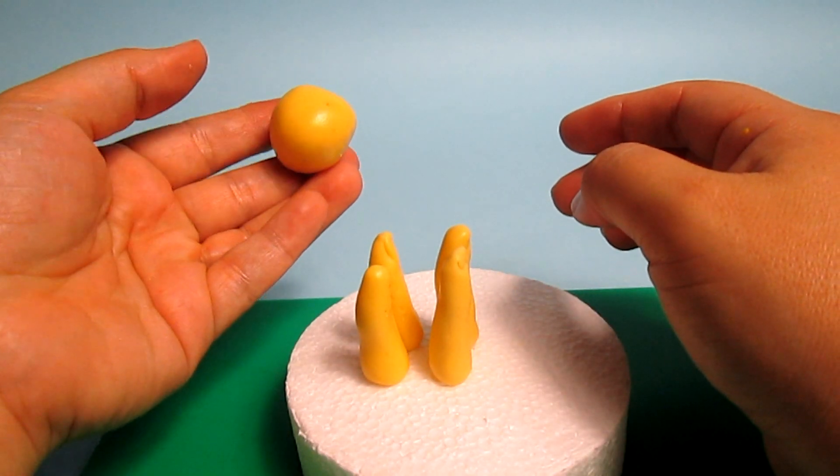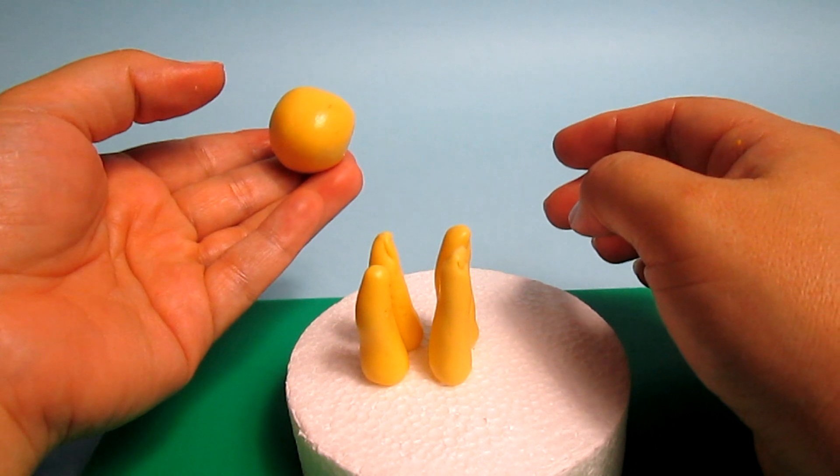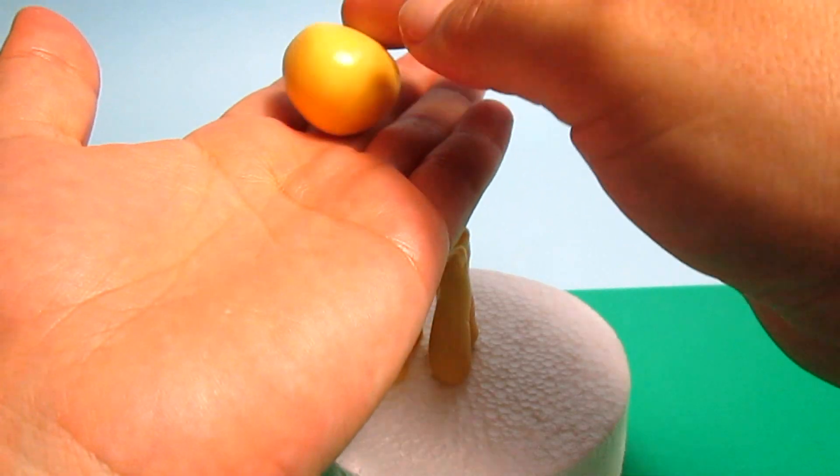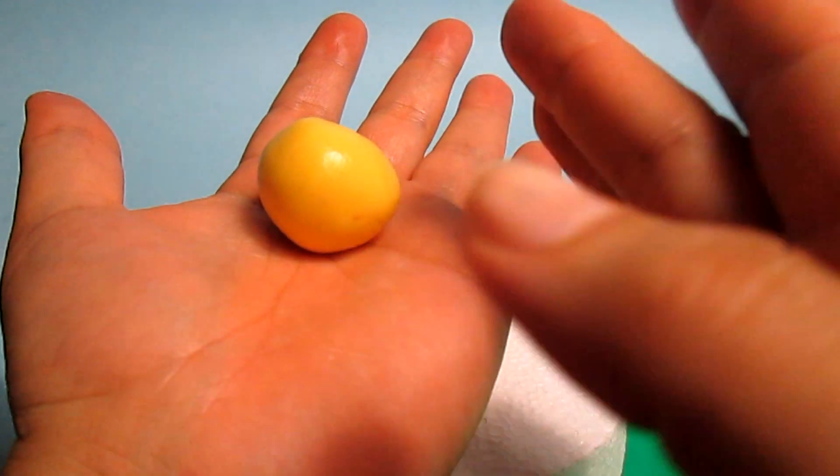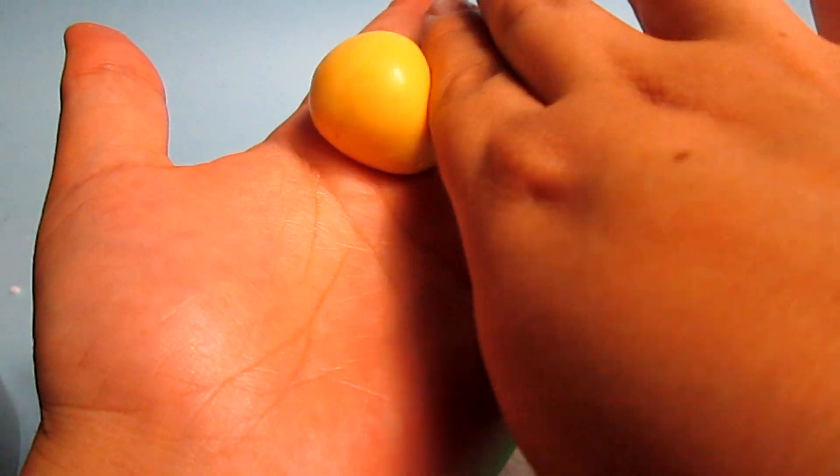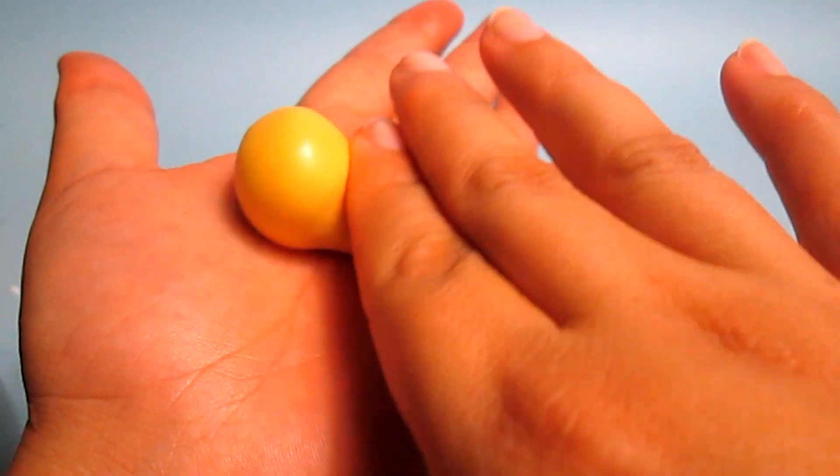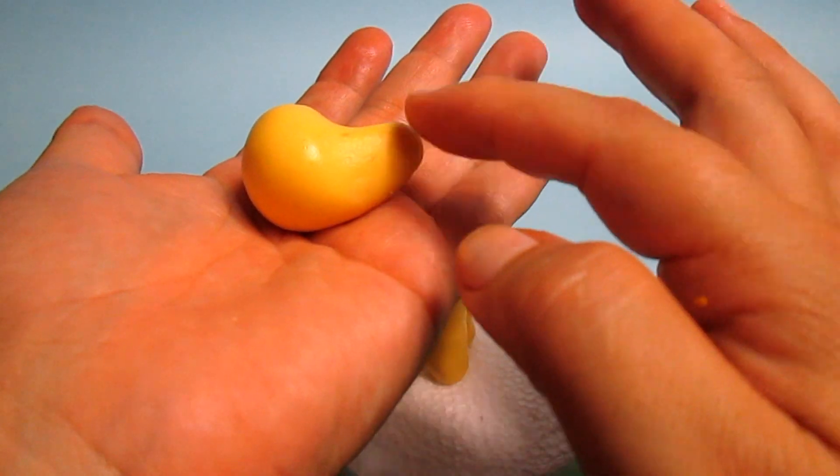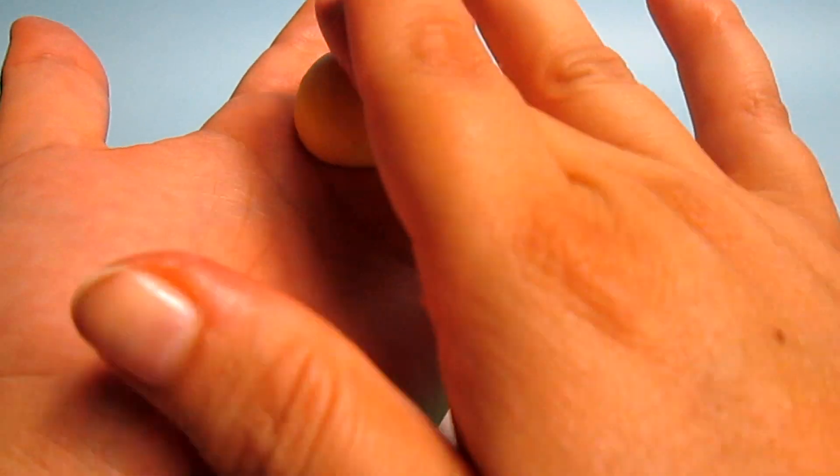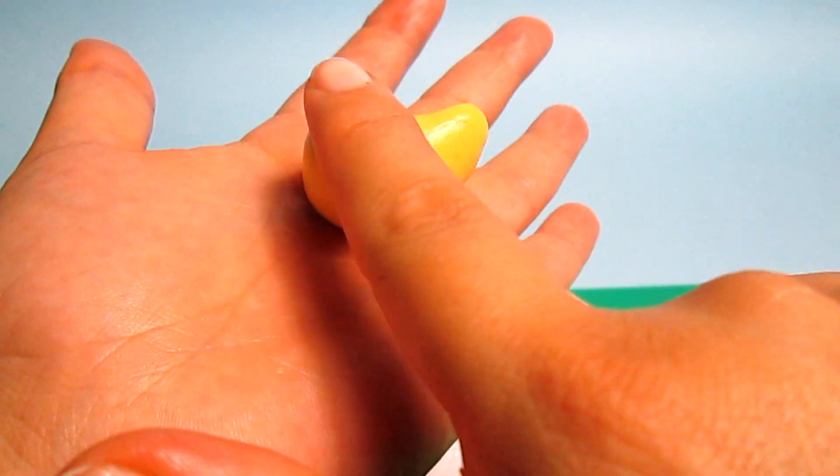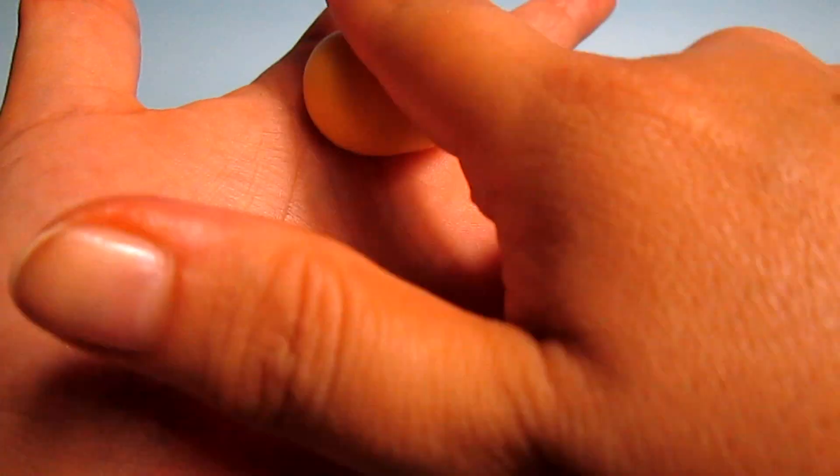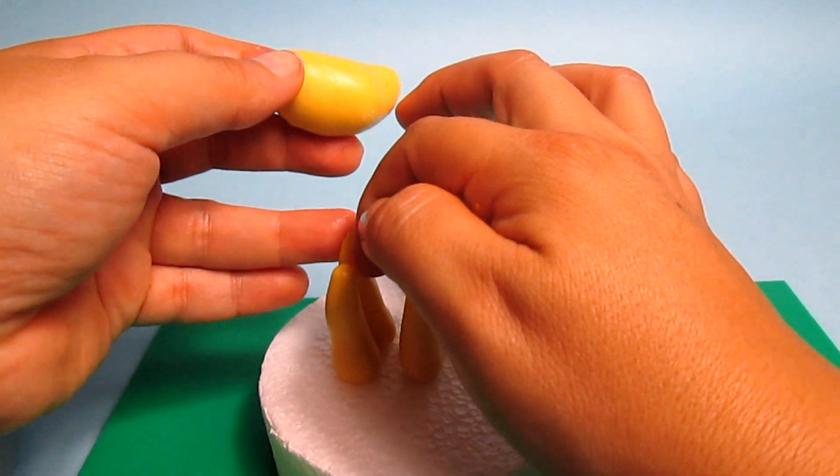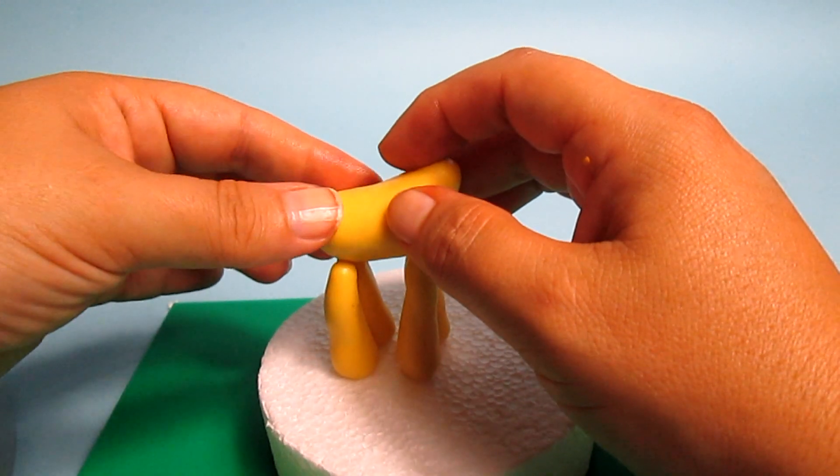Now we need to take another ball of pale yellow and what we're going to do is put it on our hand and with one finger we're going to press a little bit and create this kind of shape which is going to be the neck. Now we want the body to be a bit longer so we're going to press and roll here as well and we can put it on top of the legs, so it doesn't matter if they're not perfect because now we're going to put the body on top of it.